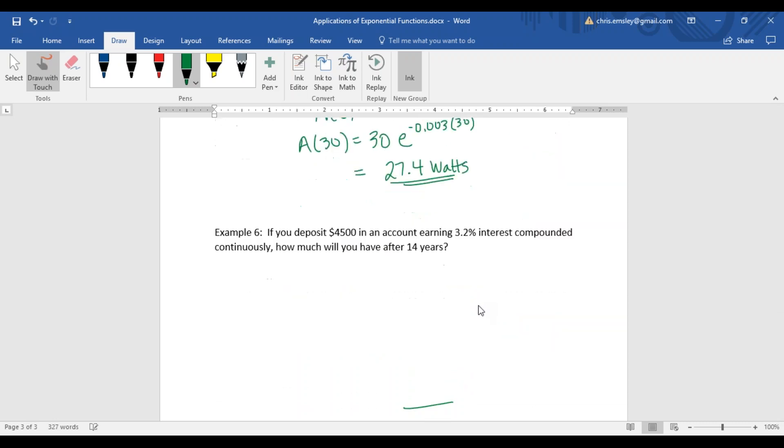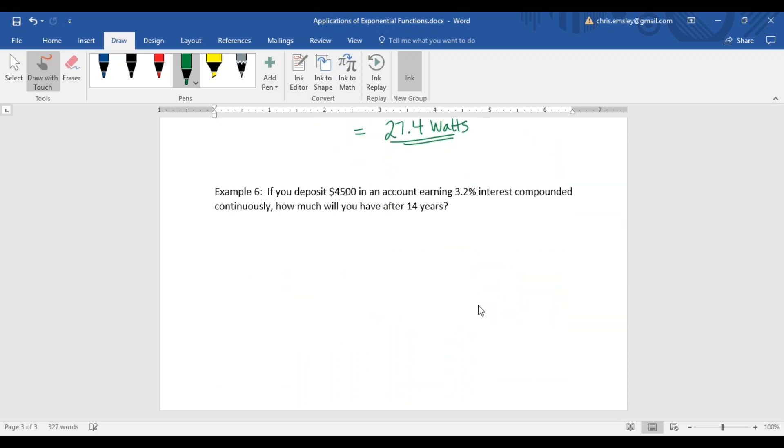One last example, we'll use the financial formula here. If you deposit $4,500 in an account earning 3.2% interest compounded continuously, how much will you have after 14 years? When you read this problem, this word continuously tells us which of our financial formulas to use. With continuously, you always want to use the one with the e in it. Some people refer to this formula as PERT.